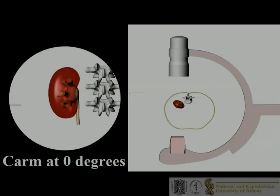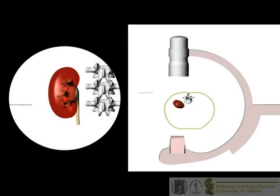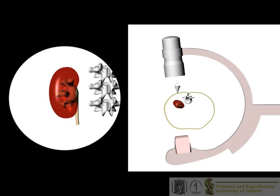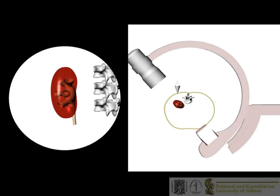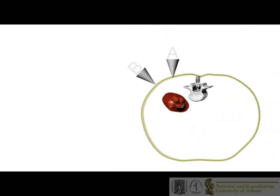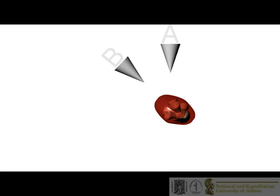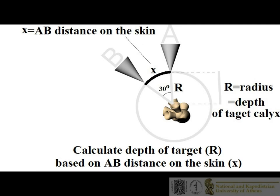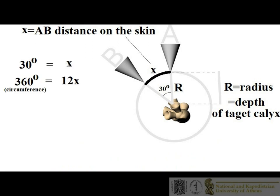Triangulate technique: the CRM is placed in a zero degree vertical position and the point of the skin overlying the target calyx is marked as point A. The CRM is then rotated at 30 degrees perpendicular to the long axis of the body, and the point of the skin projecting the same target is marked as point B. Theoretically, these two points are parts of a circle where the target calyx forms its center, and its distance from the skin equals the radius of the same hypothetical circle. Based on the skin distance between these two points, the radius can be calculated.